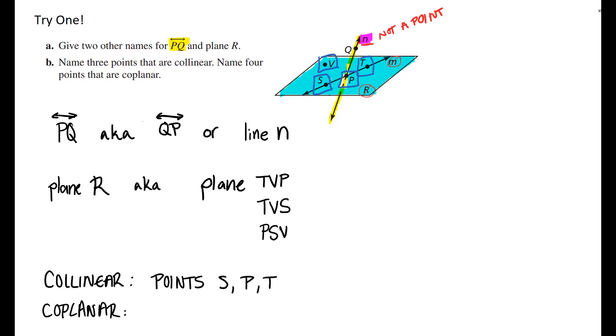To list four points that are coplanar, there are only four points on plane R, right? Because the little m is a label for a line, R is a label for the plane, but they're not next to points, so they do not represent points. So which points are actually coplanar? That would be all the ones boxed in blue. S, P, T, and V.